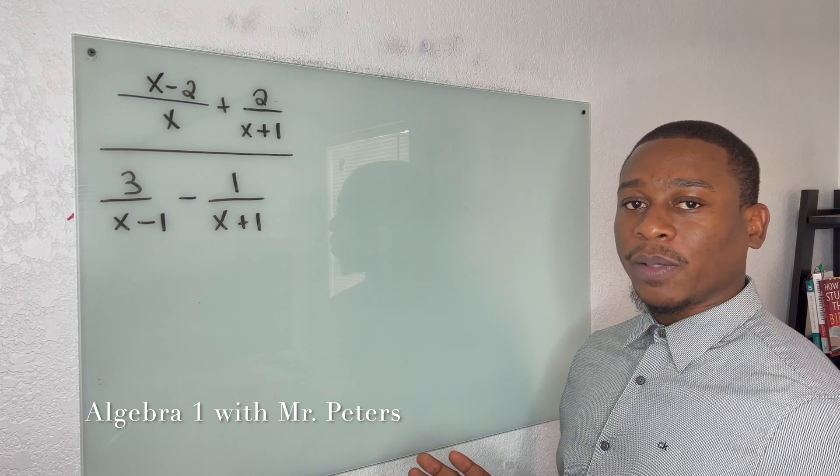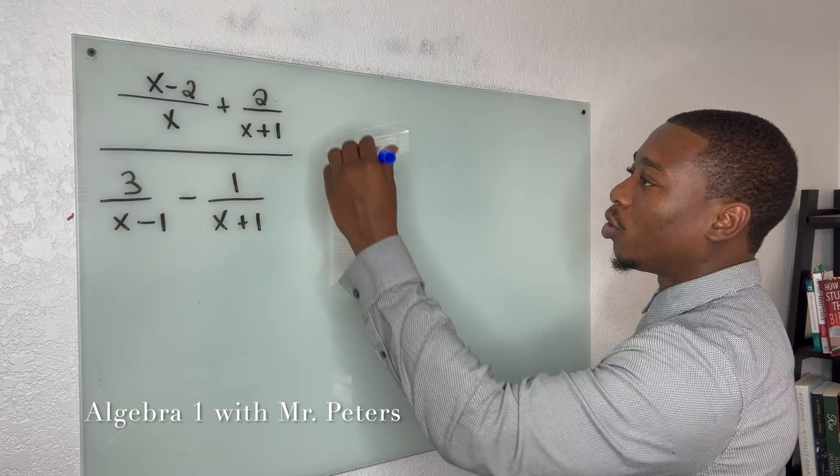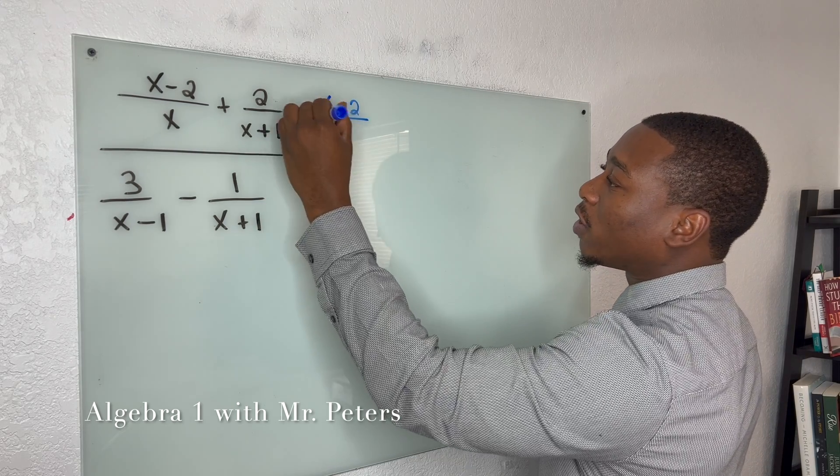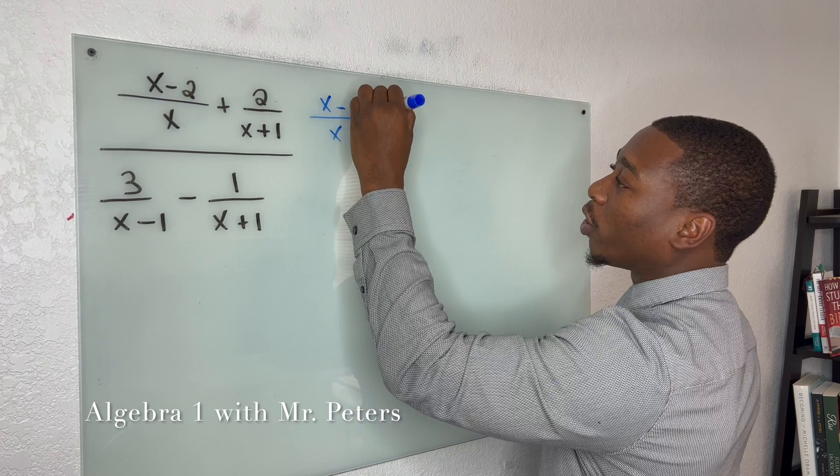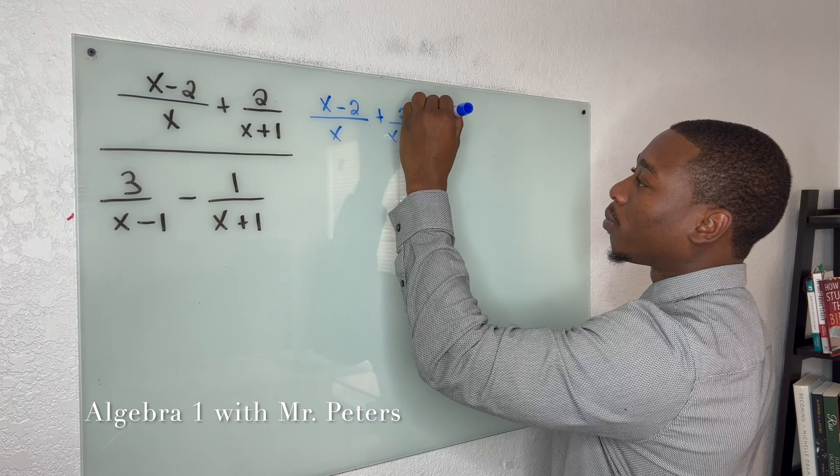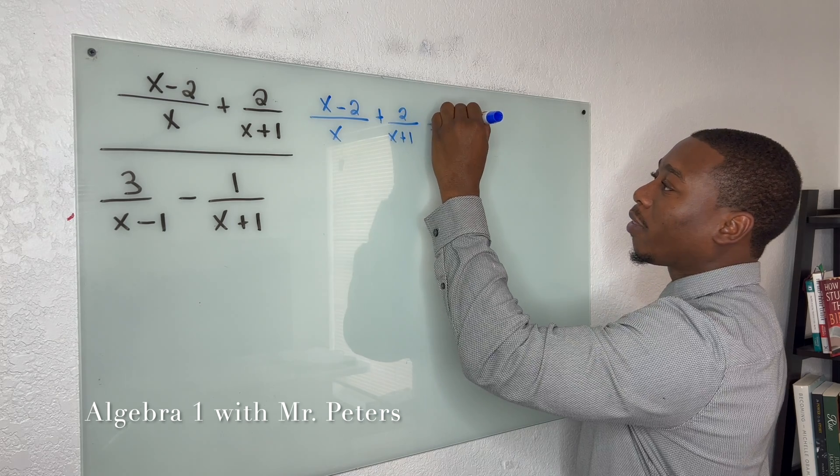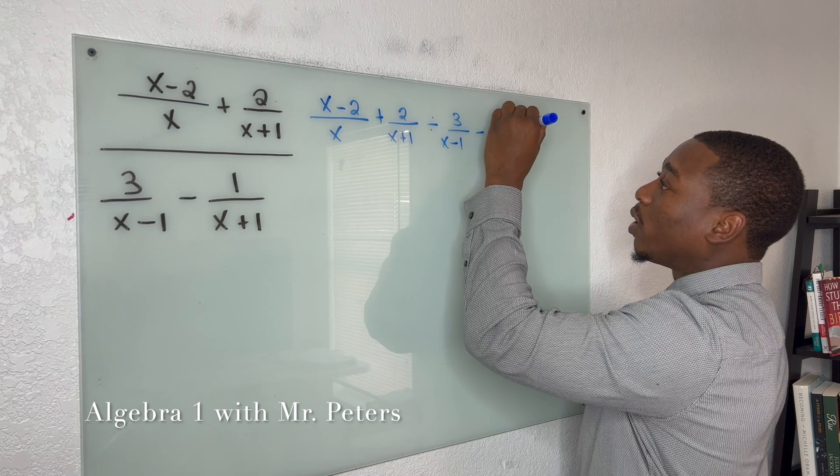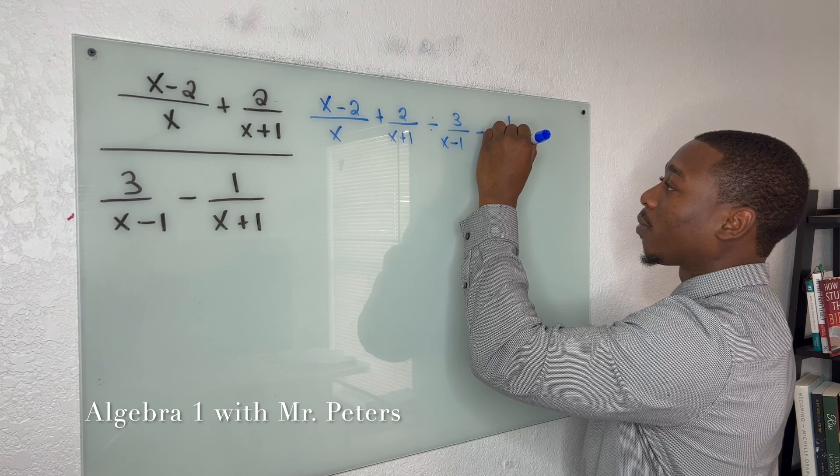So I've got four very helpful tips today but the first thing we want to do is to rewrite our problem so that we can see it a lot better or easier. So we rewrote the problem and the second thing that we want to now focus on is going to be the denominator.